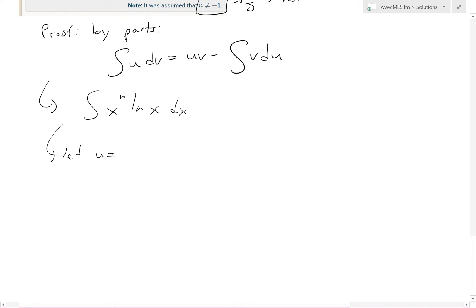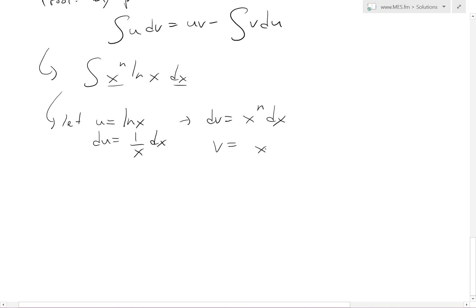we're going to let u equals to ln x. And the reason for that is because when you take the derivative, it becomes simpler. Because du equals to 1 over x dx. So if that's the case, and we could solve the integral of x power of n. So our dv is going to equal to the remainder that's left in the integrand x. And then x power of n dx. So that's this and this right there. So that v is equal to x^(n+1) divided by n plus 1 right there.